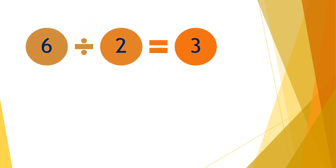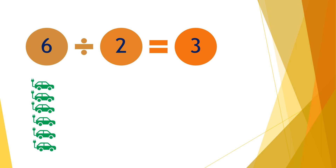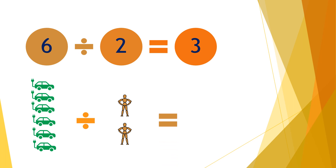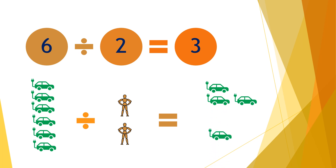Moving on to the next question: six divided by two equals three. So if you have six cars and divide them by two people, each person will receive three cars — one, two, three for each person.